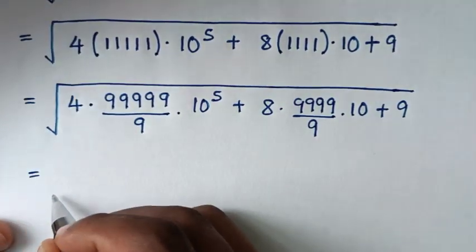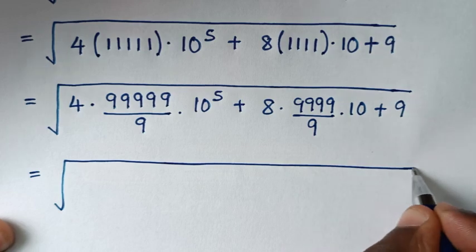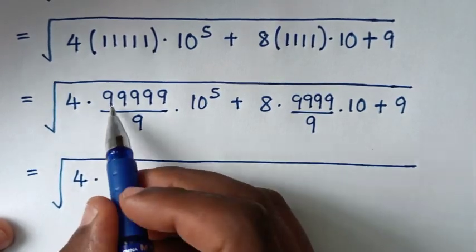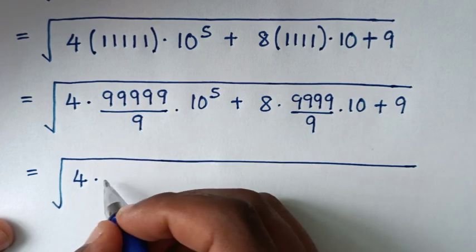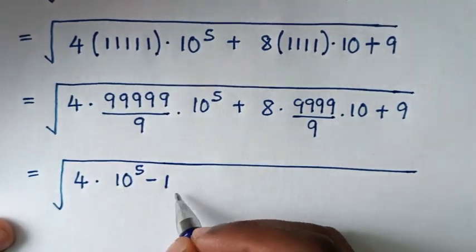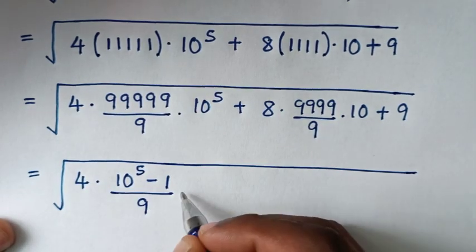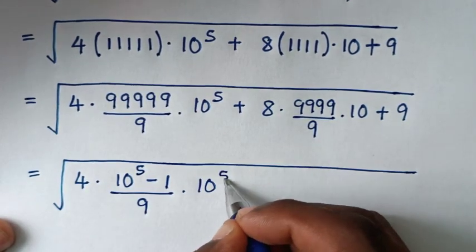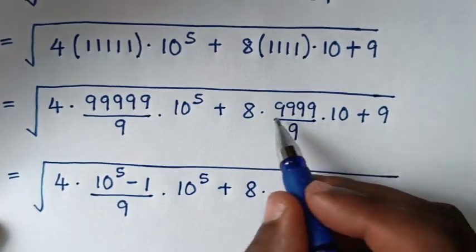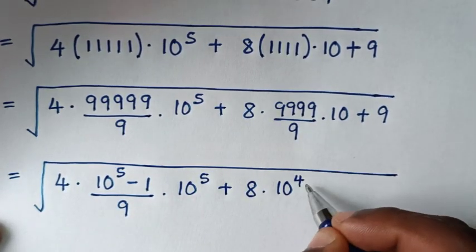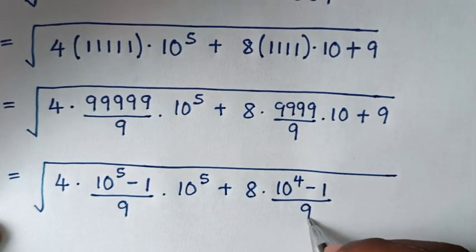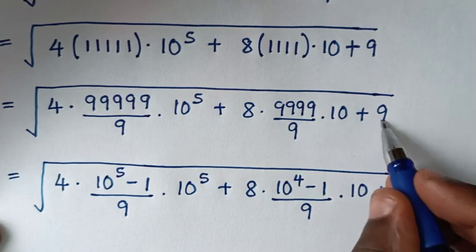In the next step it will be equal to the square root of: 4 times — these five 9s are the same as (10 to the power of 5 minus 1) over 9 — times 10 to the power of 5 minus 1, plus 8 times — these four 9s are (10 to the power of 4 minus 1) over 9 — times 10, plus 9.